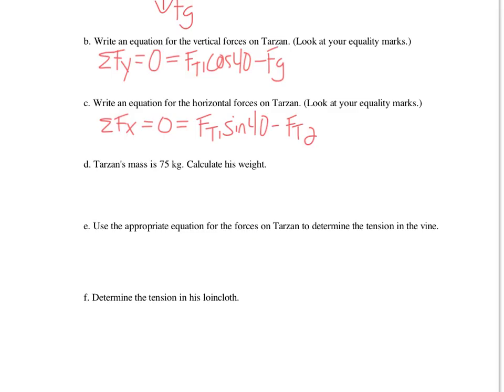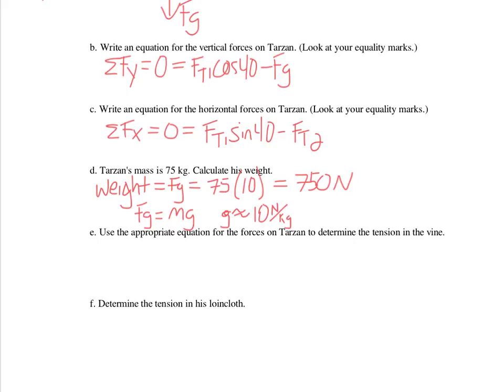All right, so now we'll go through and solve the rest of this. We know the mass is 75 kilograms and we want to figure out the weight. So we know weight, which is Fg, is mass times g. And g is about 10 newtons per kilogram. The actual one is 9.8, but we've said that if you can solve it with 10, you can solve it with 9.8. So we would take 75, which is the mass, times g, which is 10 newtons per kilogram. And that gives us 750 newtons.